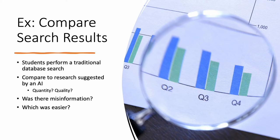Another interesting assignment would be to have students compare search results between a traditional database search of the kind we teach in library literacy sessions and using something like ChatGPT or another AI tool to suggest key research based on a topic, then compare what you get back. Which one had better quantity, better quality? How did they compare and contrast? Was there misinformation from the AI tool — did it suggest papers that don't exist, or give summaries that don't make sense? Which one was easier, which was faster, which was better? There are merits and demerits to both sides.